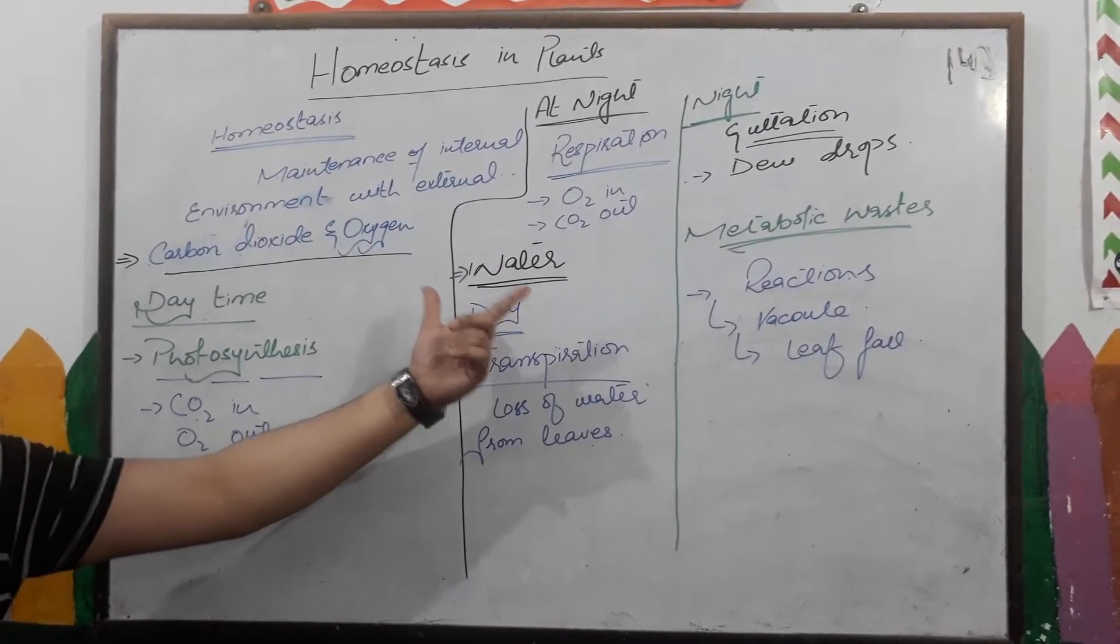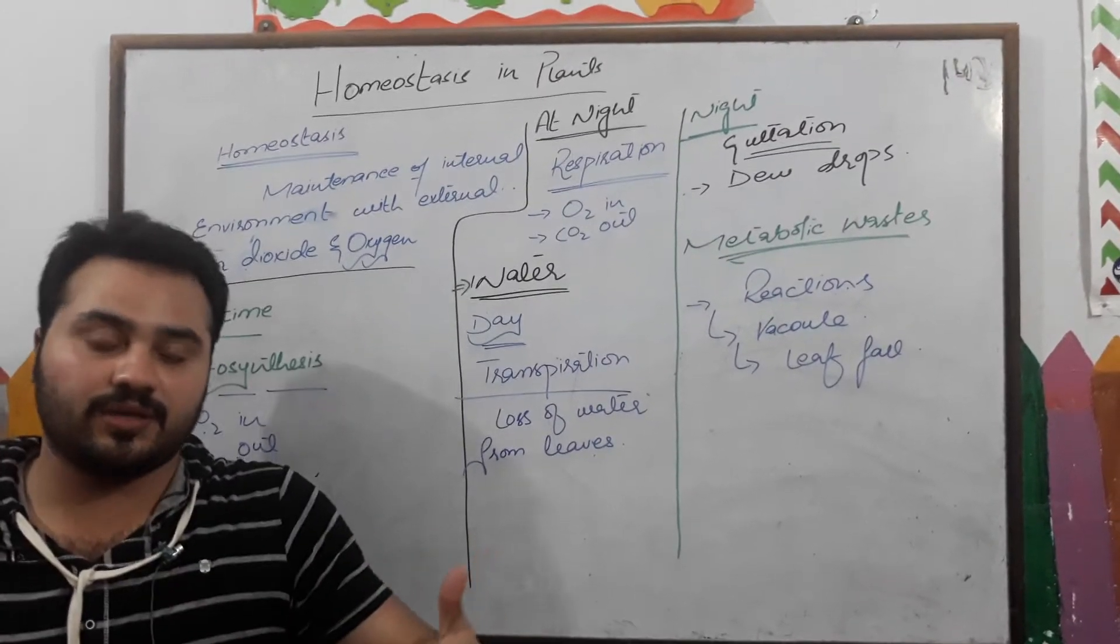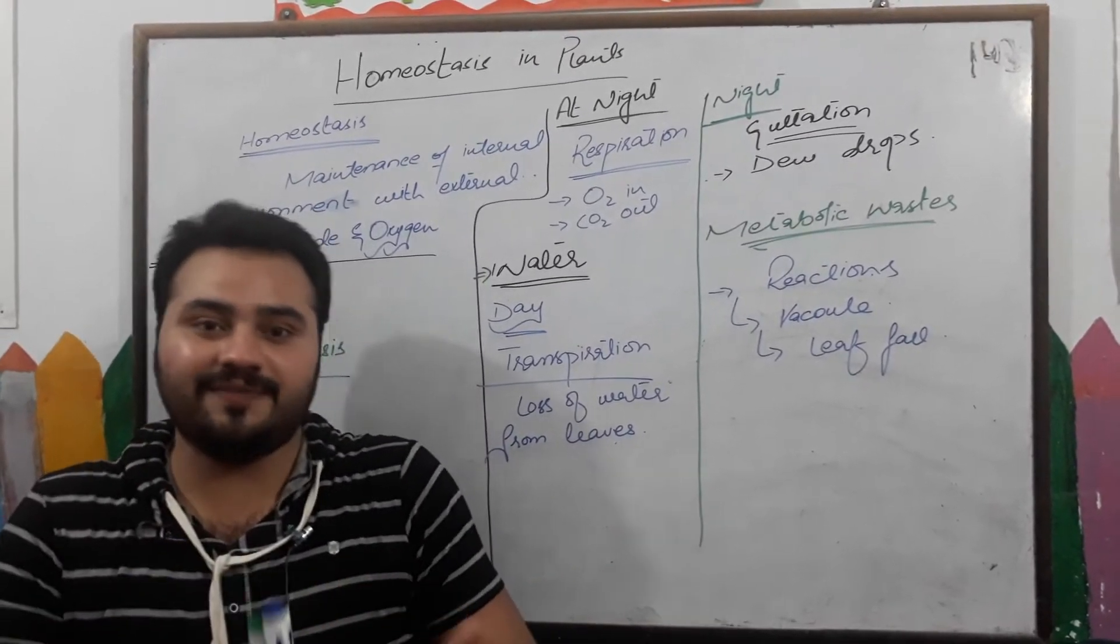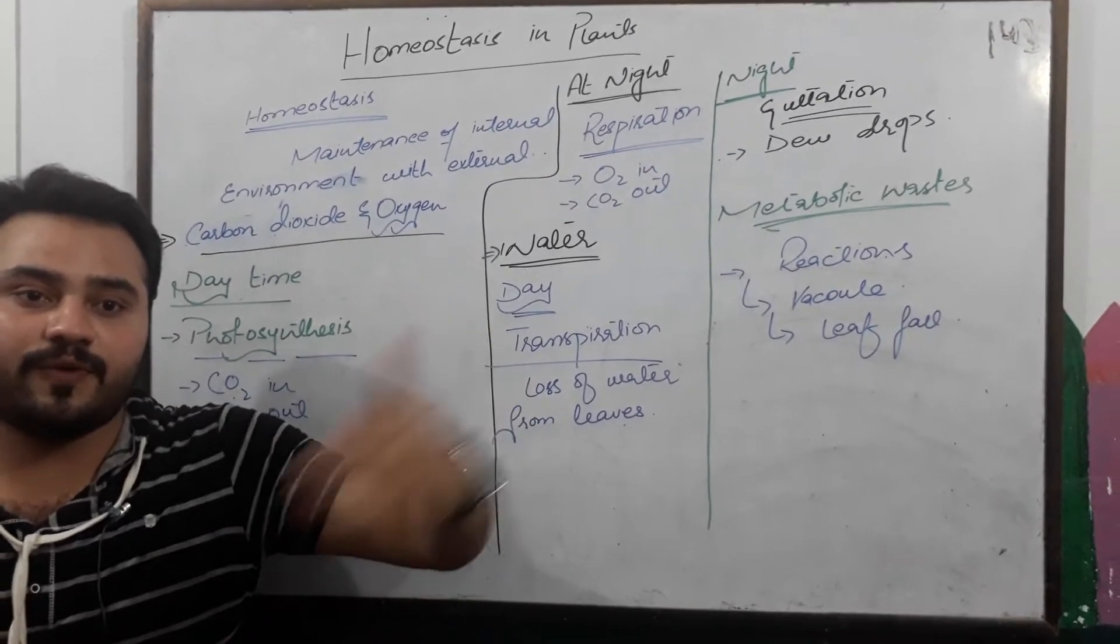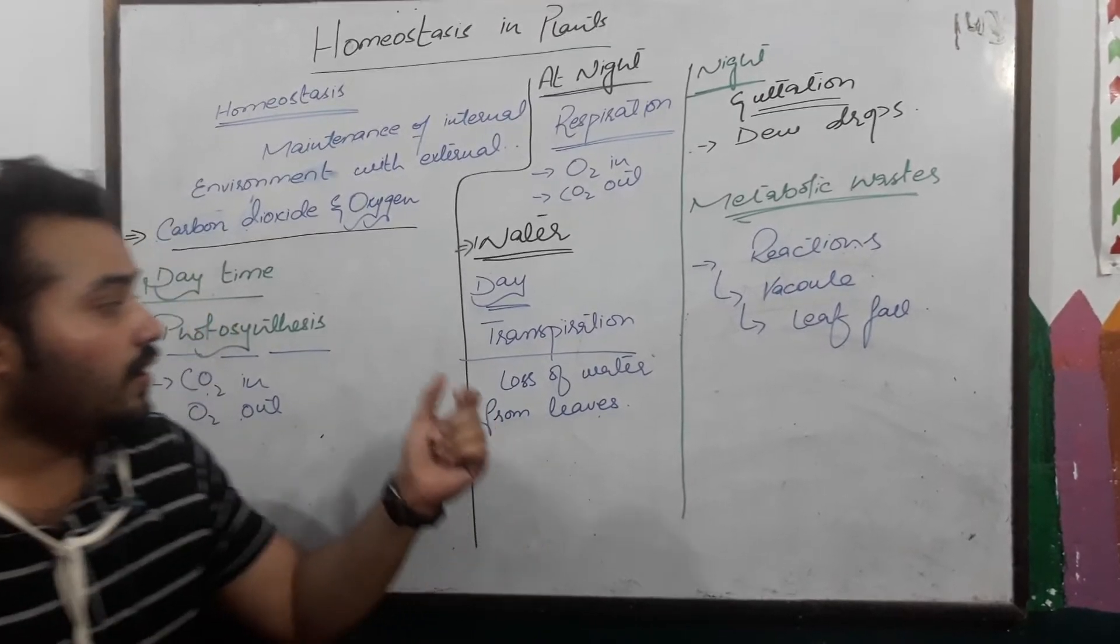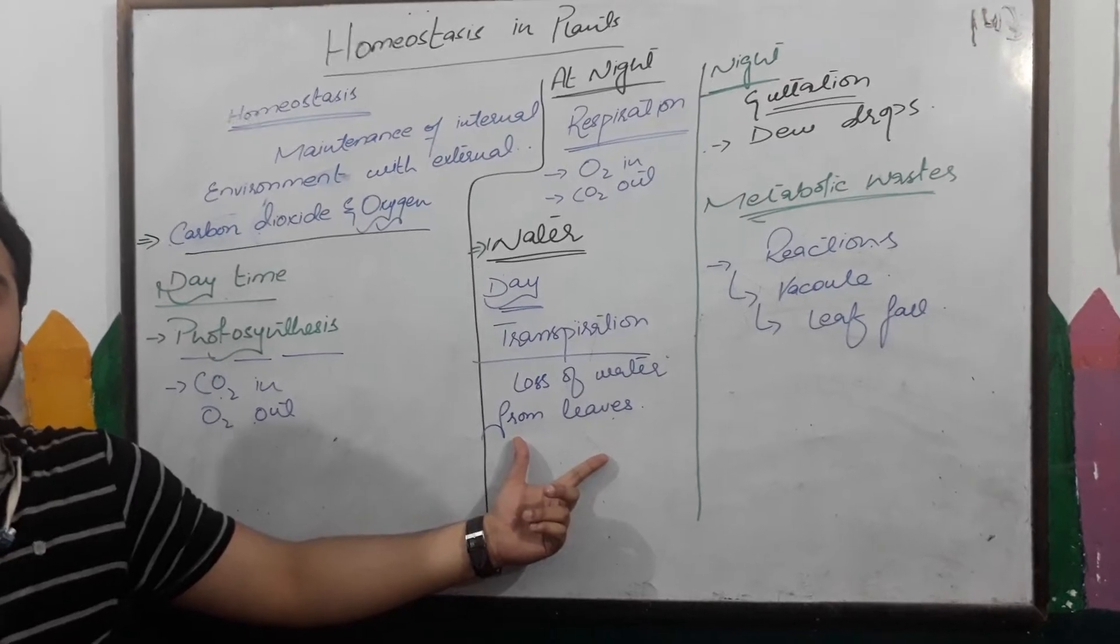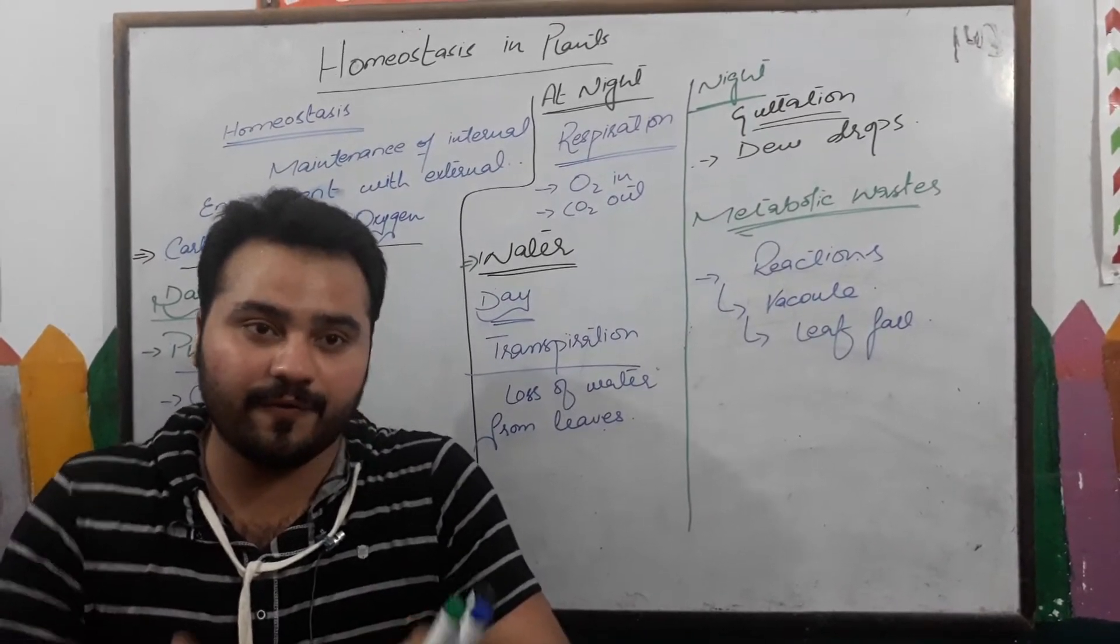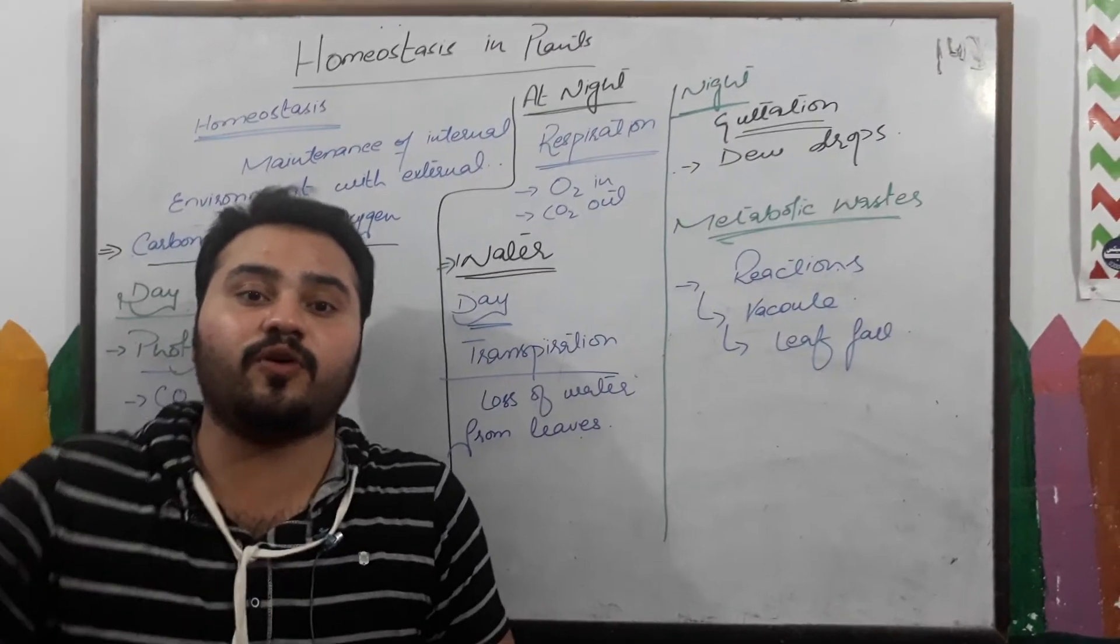Second step is water. During daytime, plants are doing transpiration. What is transpiration? The loss of water from the leaves. So why are plants doing transpiration? Because plants need water for photosynthesis, and extra water is expelled out from the leaves.